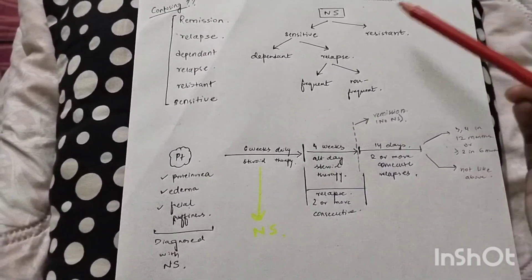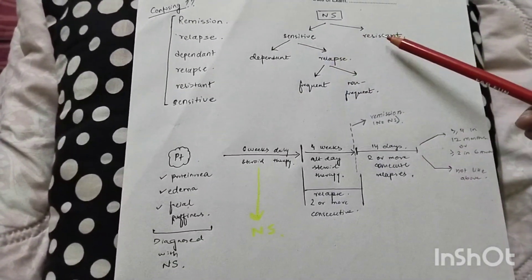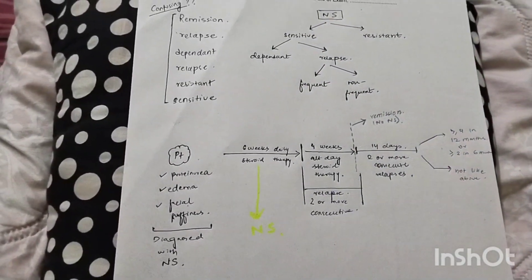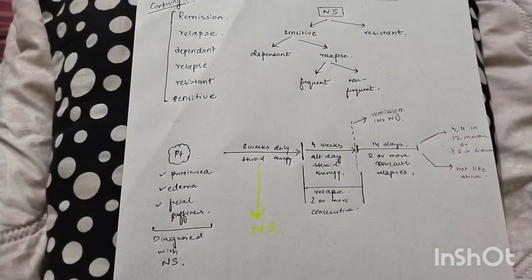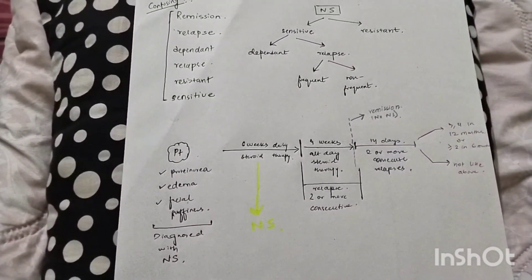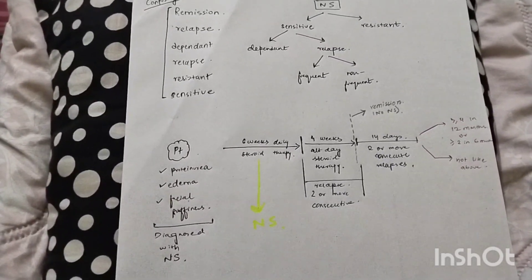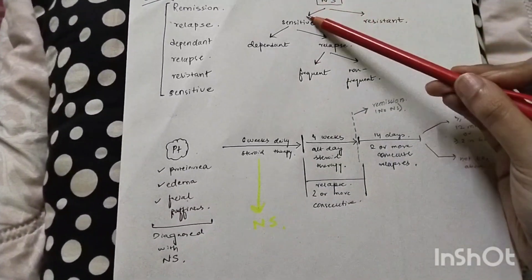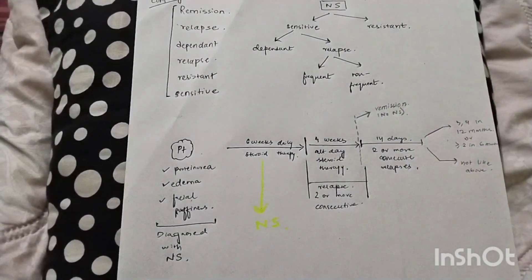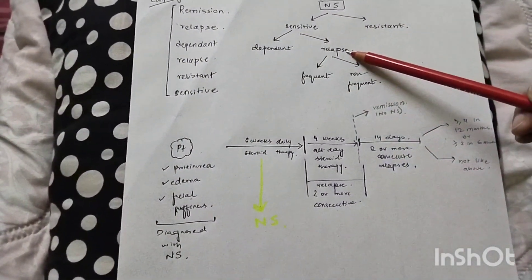First of all, you have to know that nephrotic syndrome (NS) is of two types: steroid sensitive nephrotic syndrome and steroid resistant nephrotic syndrome. Steroid sensitive nephrotic syndrome means the nephrotic syndrome is getting better with steroids, and steroid resistant nephrotic syndrome means it is not getting better after giving steroids. Steroid sensitive nephrotic syndrome is again of two types: steroid dependent nephrotic syndrome and relapsing nephrotic syndrome.